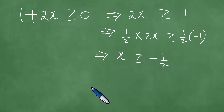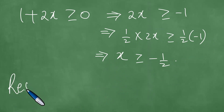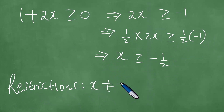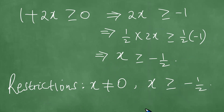So we have two restrictions. The restrictions are: x is not 0, together with x is greater or equal to minus one half. These are the restrictions, and we proceed to solve the problem right now.